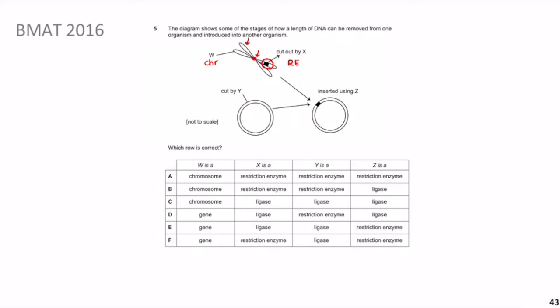Restriction enzymes recognize and cut palindromic sequences in DNA. An example: 5'-GGATCC-3' on the top strand, with complement 3'-CCTAGG-5' on the bottom. Reading the bottom strand in reverse gives GGATCC — identical to the top strand. That's a palindromic sequence. Restriction enzymes love these sequences; this is exactly where they cut.